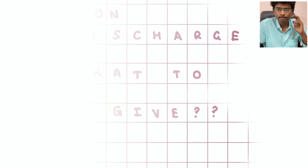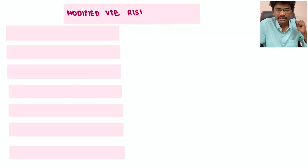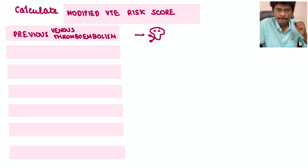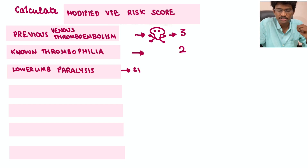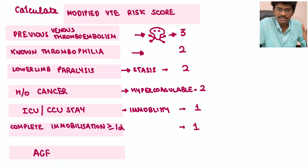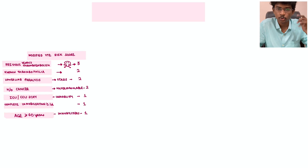What blood thinner should be given post-discharge in COVID patients? First, calculate the modified venous thromboembolism risk score. Scoring: previous history of VTE = 3 points (maximum); lower limb hemiparesis or paralysis (stasis) = 2 points; history of cancer or hypercoagulable state = 2 points; known thrombophilia = 2 points; hospitalization for severe COVID or ICU stay = 1 point; immobilization for more than one day = 1 point; very elderly patients who are usually immobile = 1 point.